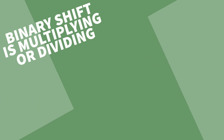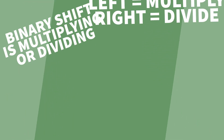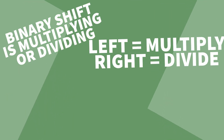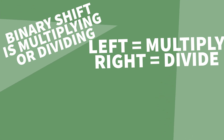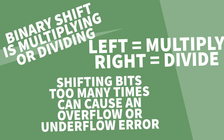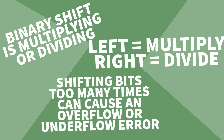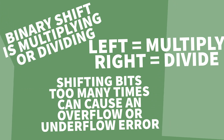To recap: binary shift lets you multiply or divide. Left has a multiply effect, right has a divide effect. And finally, overflow and underflow errors occur if we shift too many times.